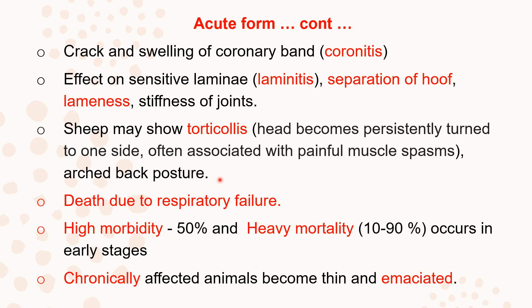The animal assumes an arched back posture, again because of severe pain in the body and legs due to laminitis and coronitis. Death is generally due to respiratory failure. Blue Tongue causes high morbidity of 50%, and heavy mortality ranging from 10 to 90%. If the disease is very severe and in early stages, it causes heavy mortality. When the case becomes chronic, the animal becomes thin and progressively emaciated.